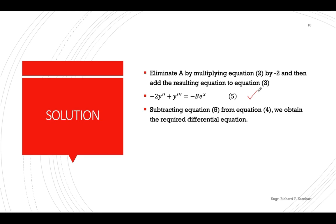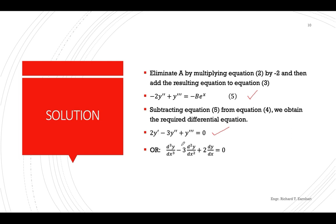Equations four and five each contain only negative be^x. By subtracting equation four from equation five, we eliminate b and obtain the required third-order differential equation. This can also be expressed in derivative form — either representation is acceptable as the final answer.